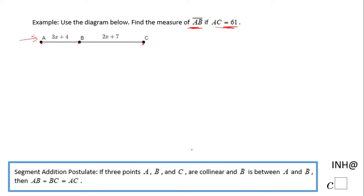These three points are what we call collinear — they are on the same line. Therefore we can use the Segment Addition Postulate, which says if we have three collinear points A, B, and C, and B is between them, then we can write the statement: AB plus BC equals AC.